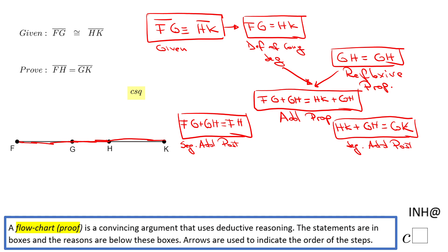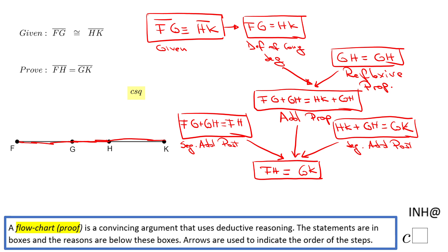Now, from these three statements — that's why I draw three arrows — I can get another statement. I'm going to replace FG plus GH with FH, and HK plus GH with GK, so FH equals GK. This statement is the result of those three statements — the logical step — and the reason here is the substitution property.